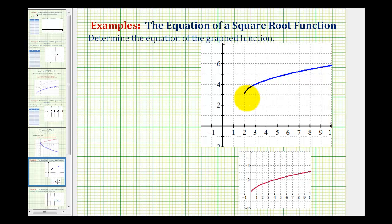We want to determine the equation of the blue square root function based upon how it's been transformed from the basic square root function graphed here in red. Now there's a couple of ways of doing this, but I think what might be helpful is to take a look at corresponding points on the two functions.